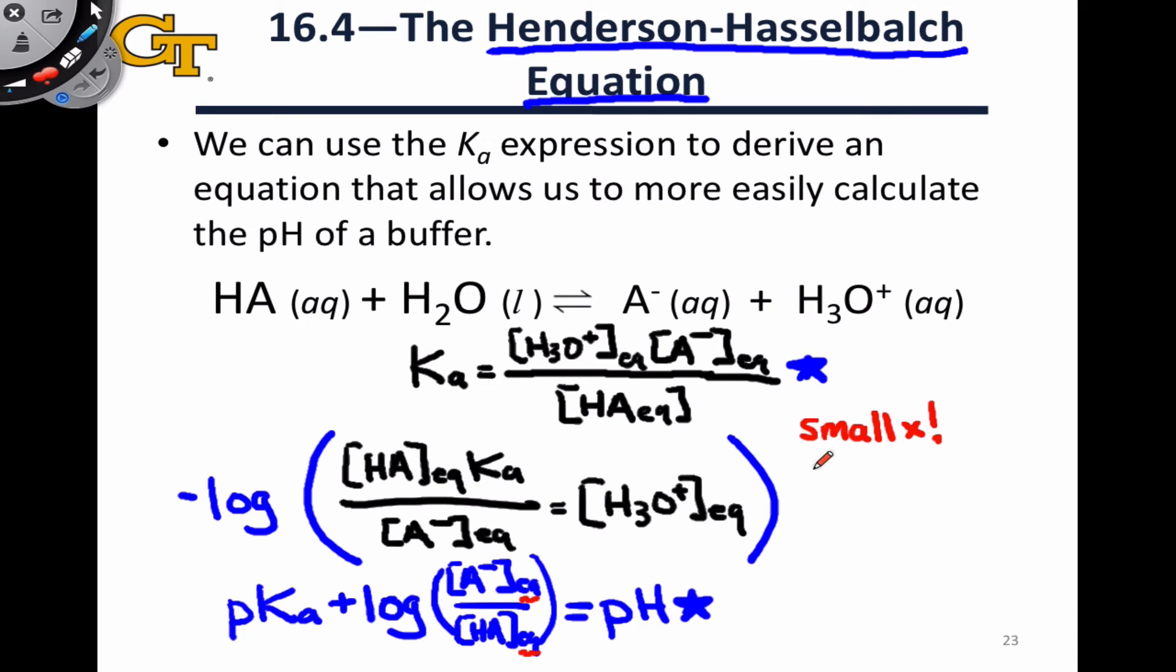In words and conceptually, what this means is that the initial concentration of, say, conjugate base is approximately equal to the final concentration of conjugate base. And in fact, the same idea applies to the acid concentration. Because these were so large relative to the Ka to begin with, we can assume that they don't change much. They change to a negligible degree as this process comes to equilibrium.